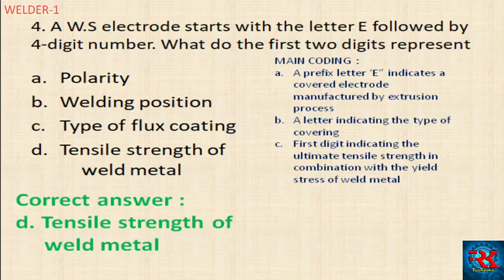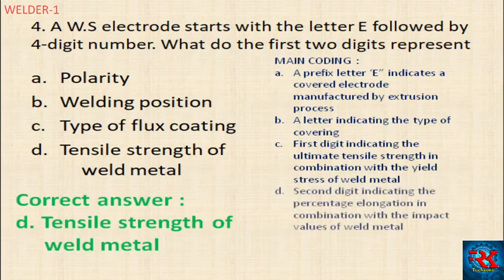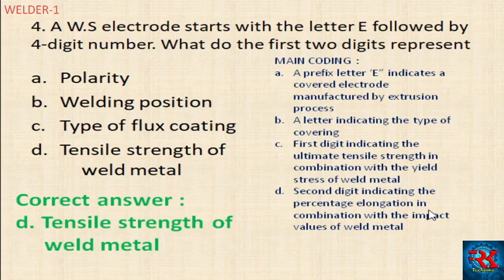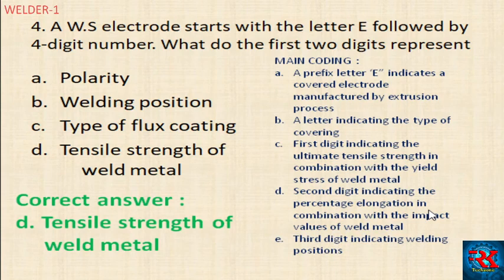In the electrode coding, the first digit indicates the ultimate tensile strength. The second digit indicates the percentage of the tensile strength. The third digit indicates the welding position — flat, horizontal, vertical, or overhead.